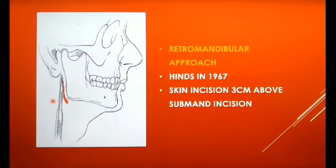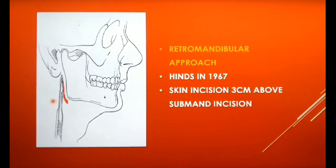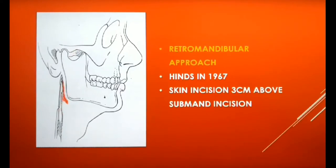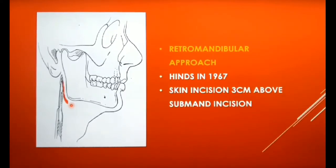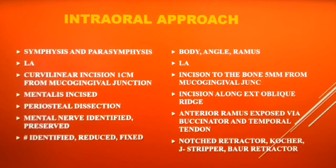The second extra-oral approach is the retromandibular approach described by Heinz. It is only a variation of the submandibular incision and is used to gain access to the angle, the ramus, and the subcondylar region. This incision will curve behind the angle and is placed at least 3 cm above the submandibular incision. Here also you encounter the parotid, the masseter, and the deep cervical fascia as you proceed with the dissection. Other incisions used specifically to approach the condyle will be discussed in detail when discussing condylar fractures.